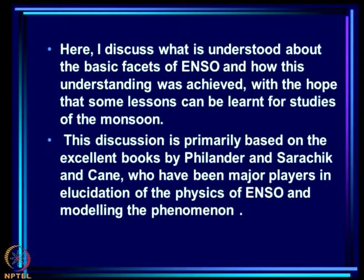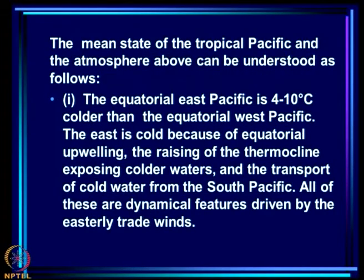Models of the coupled atmosphere-ocean system are now capable of generating predictions of ENSO with reasonable skill. This discussion is primarily based on the excellent books by Philander and Sarachik and Mark Cane, major players in the elucidation of ENSO physics and modeling. The mean state of the tropical Pacific: the equatorial east Pacific is 4 to 10°C colder than the equatorial west Pacific. The east is cold because of equatorial upwelling, the raising of the thermocline exposing colder waters, and transport of cold water from the south Pacific — all dynamical features driven by the easterly trade winds.